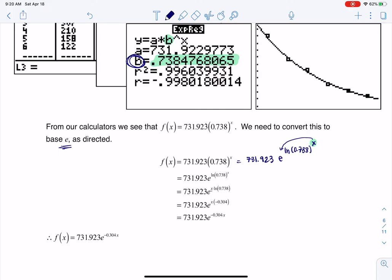And that's what you see me doing in this step here. And then after that, I'll write this out one more time. This becomes 731.923 e to the x times ln of 0.738.